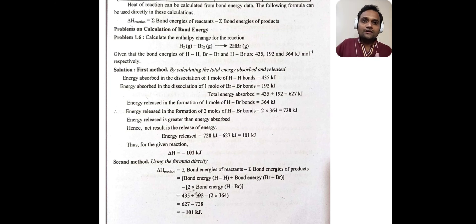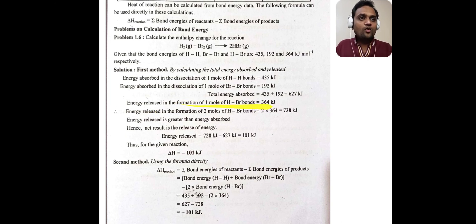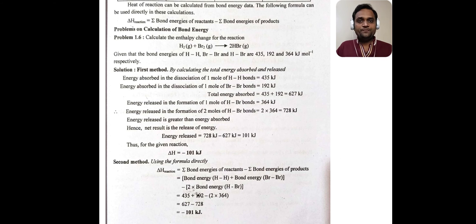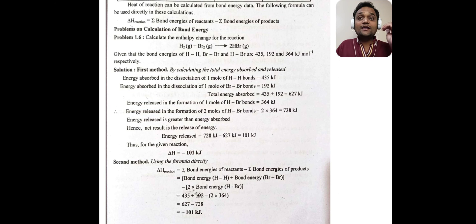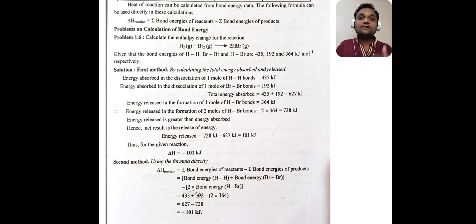Energy released in the formation of products: there are 2 moles of HBr. Energy released in the formation of 1 mole of HBr is 364 kJ/mol; for 2 moles we multiply by 2, giving 728 kJ. Total energy absorbed is 627 kJ and total energy released is 728 kJ — energy released is greater than energy absorbed.